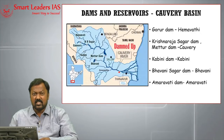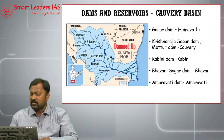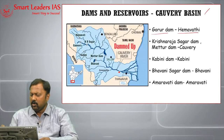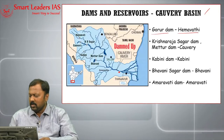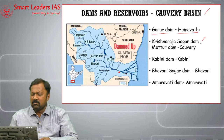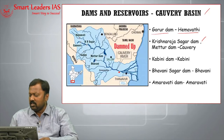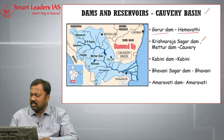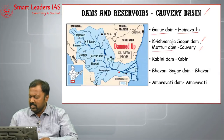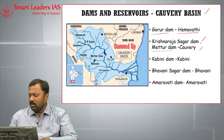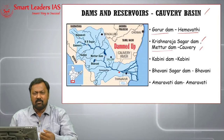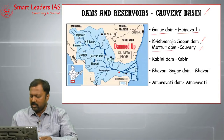The dams and reservoirs in the Cauvery Basin include: the Gorur dam on the Hemavati River, Krishna Rajasagar dam on the Cauvery, Mettur dam in Tamil Nadu, Kabini dam, Bhavani Sagar dam, and Amaravati dam — all located across the Cauvery and its tributaries.